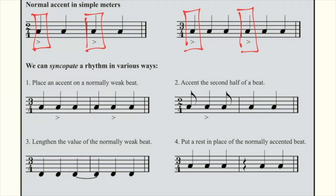The first example is placing an accent on a normally weak beat. So instead of placing the accent on 1 in 3-4 here, we're going to place the accent on the second beat. This is how that sounds.